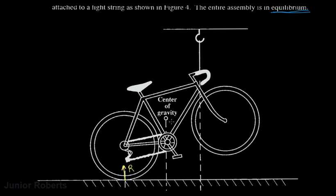We also indicate the center of gravity, which is the point on the body where all the weight of the object acts. So at that point we have the weight W acting downward in the direction of gravity. Additionally, the bicycle is supported by the string, so we have a tension force T acting along the string. Those are our three forces: reaction force R, weight W, and tension T.